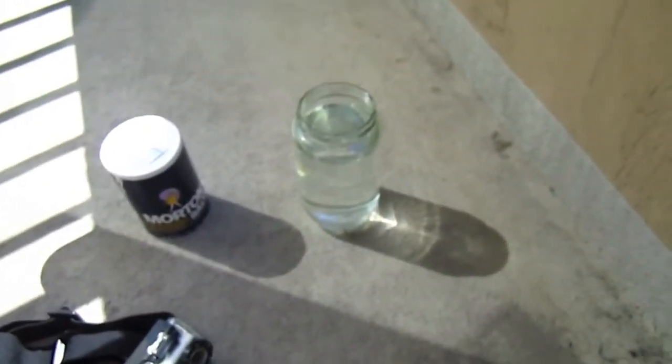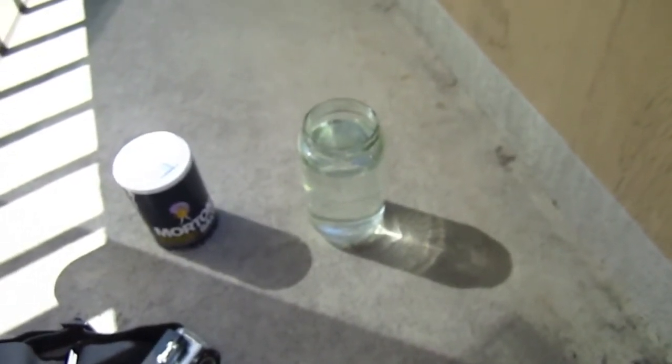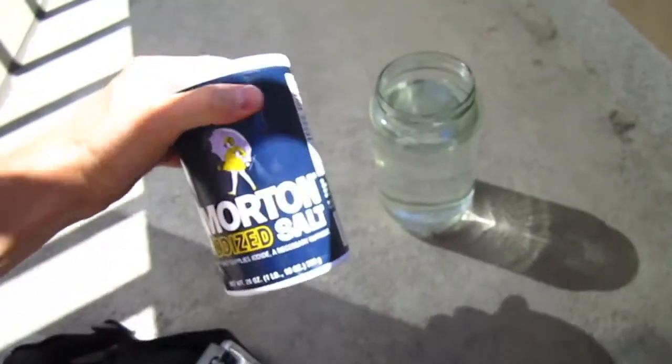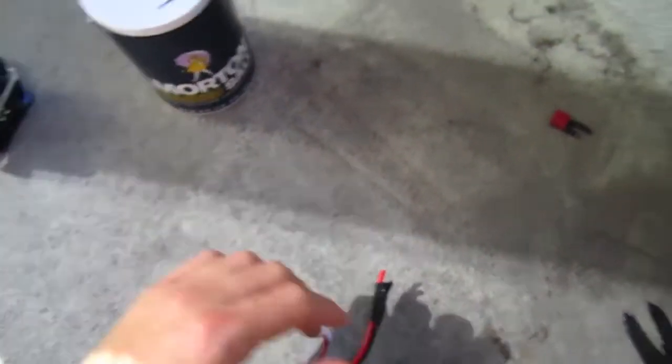So basically you can't use regular tap water because there's very little ions in there and you need ions to create, to let a current flow through the water. So I'm just going to add a bunch of salt to the water so that this can act as a medium for the electrons to flow from the positive to the negative.